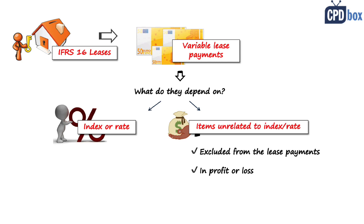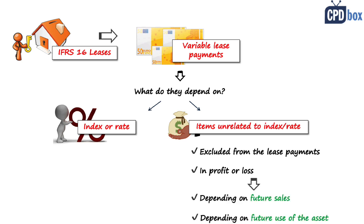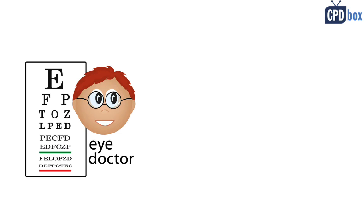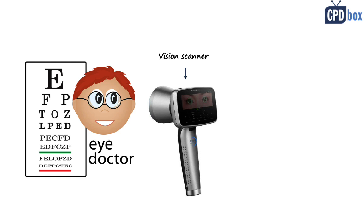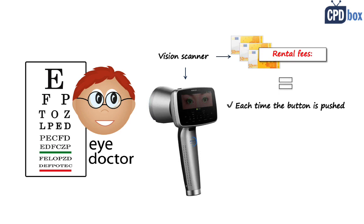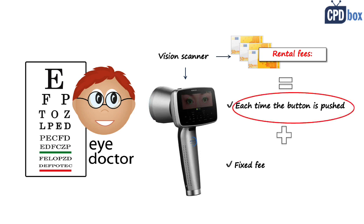This also applies to rentals depending on the future use of an asset. COVID-19 related rent concessions are accounted for the same way — not as a lease modification — according to the new amendments to IFRS 16. As a real-life example: my son is farsighted and his eye doctor uses a special machine to measure his diopters. The doctor must pay a rental fee for every single push of the button, on top of a fixed fee — this is exactly a variable lease payment depending on use of an asset.